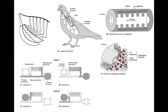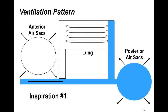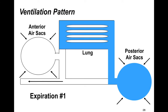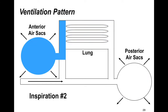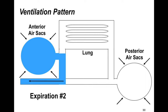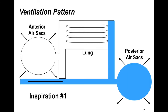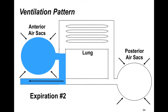To go all the way around the system from inspiration to final expiration requires two respiratory cycles. On the first inspiration, a valve is closed and air goes straight back to the posterior air sacs. Expiration one pushes the air into the lungs. Inspiration two draws air out of the lungs and into the anterior air sacs. Expiration two finally pushes the air out of the air sacs and into the environment. Air is always moving all the way through the system — it's a very efficient system.